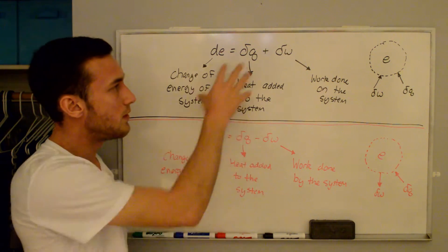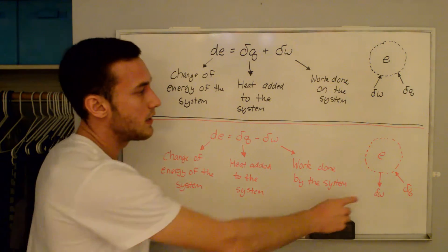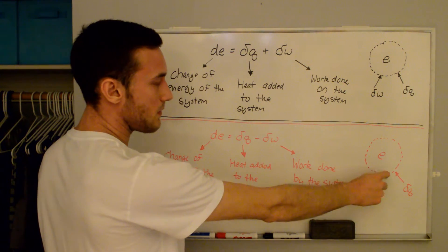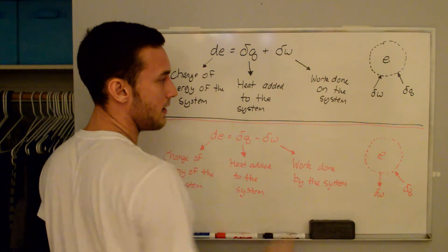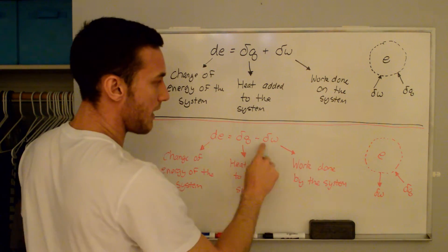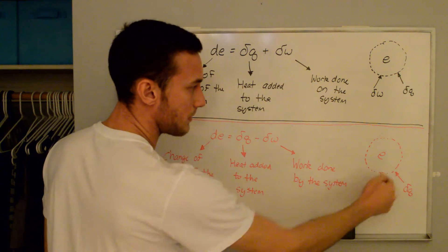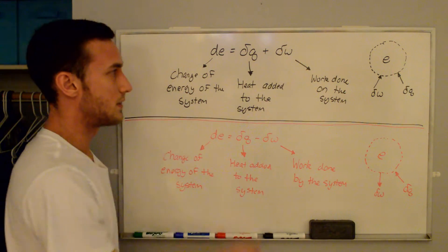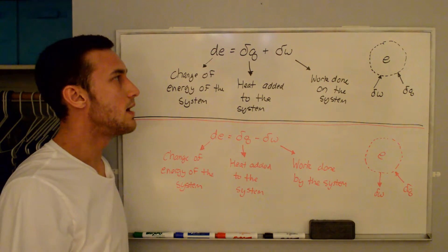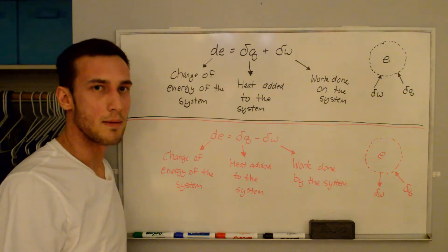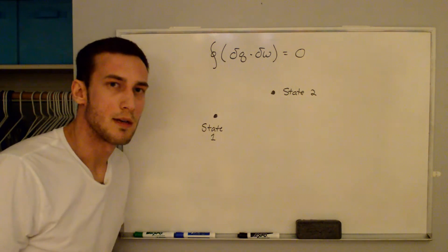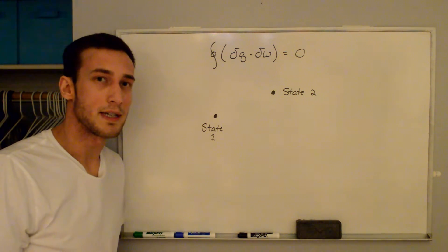Both forms are equivalent. If we have work done by the system on the surroundings — arrows going outward — and we take the negative of that, the arrow just flips and it's the same as the first statement. So these are two equivalent ways of saying the same thing, it just depends on how you want to write them. I want to back up to another way to define the first law that may help with intuition for the second law.